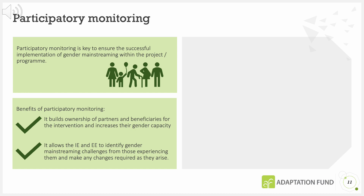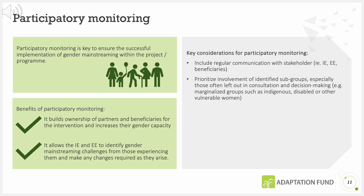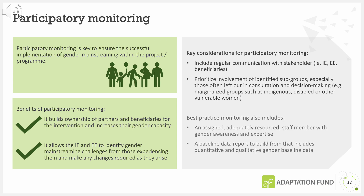Key considerations for participatory monitoring include regular communication with stakeholders, for example implementing and executing entities and all beneficiaries. Prioritise involvement of identified subgroups, especially those often left out in consultation and decision-making, for example marginalised groups such as Indigenous, disabled or other vulnerable women. Best practice monitoring also includes an assigned, adequately resourced staff member with gender awareness and expertise, and a baseline data report to build from that includes quantitative and qualitative gender baseline data.